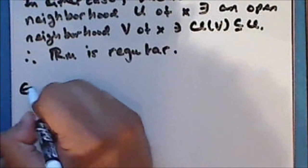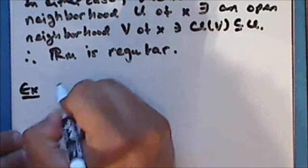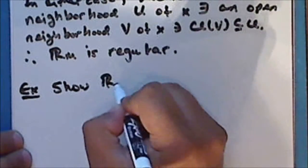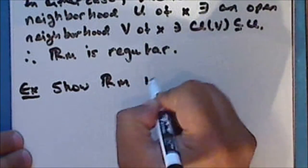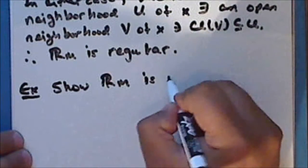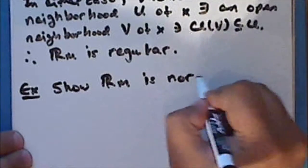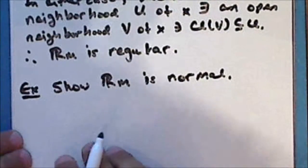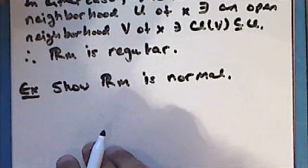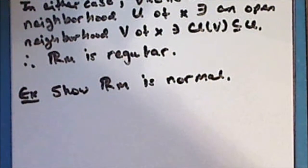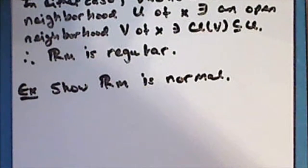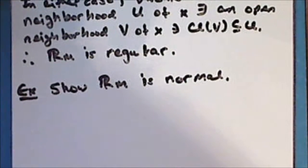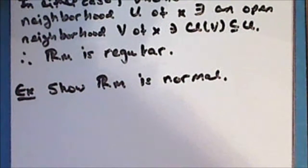As an exercise, show that the Michael line is normal. As a hint, the proof is very similar to the proof that the Sorgenfrey line is normal.